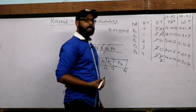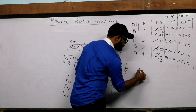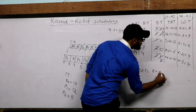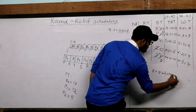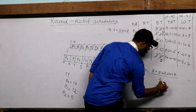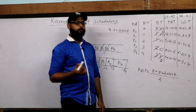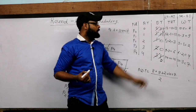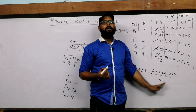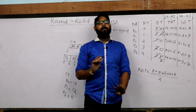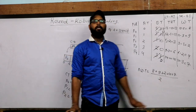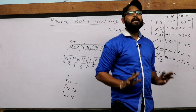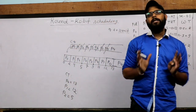Average waiting time = (8 + 9 + 2 + 4 + 7) divided by 5. Similarly, average turnaround time = sum of all turnaround times divided by 5. These two calculations are commonly asked in GATE or ES questions. Remember the two formulas: turnaround time = CT minus AT, and waiting time = TAT minus BT.